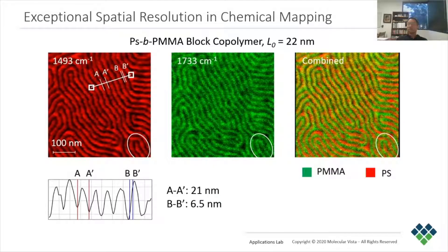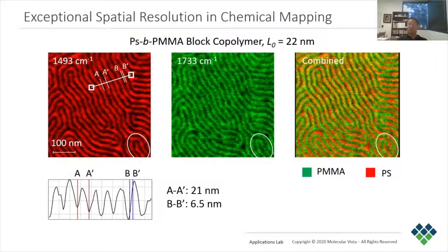To determine the spatial resolution, we use a block copolymer which has a well-defined distribution of chemical components. In this PS-PMMA block copolymer with a full pitch of 22 nanometers, each chemical component is about 11 nanometers wide. When we set the excitation laser to 1493 wavenumber, which is a strong PS absorption band, PIFM highlights just the PS molecules shown in red. When we repeat the measurement at the same location with the laser set at 1733 wavenumber, PIFM highlights the PMMA molecules in green.